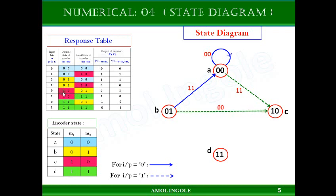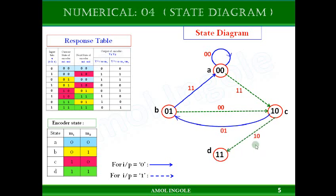Now let us see the 10 state. When you are in the 10 state and give input 0, the next state is 01, shown with a darker line, with output 01. When the input is 1 and the state is 10, the next state is 11, shown with a dotted line, with output 10. So from 10 to 11 the output is 10.